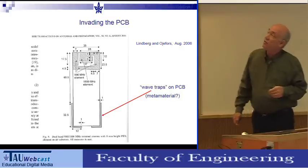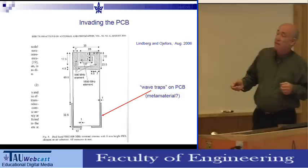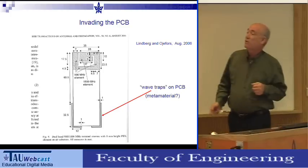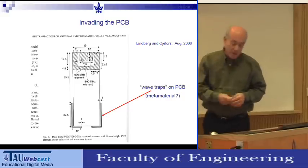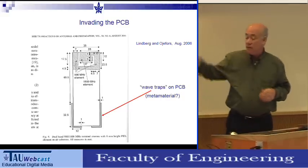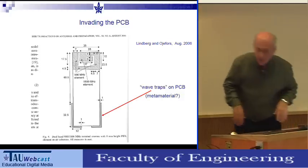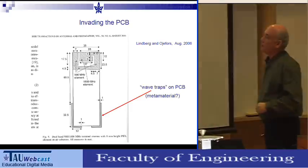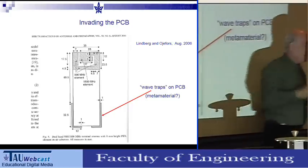Here's another example from the literature about invading the PCB. What people call the antenna in a handset — in fact the entire handset is the antenna. You invade the PCB. Early work also added wave traps around it (today we might call them metamaterials). What you see is effectively a dipole: one arm is the feed element and the PCB itself is the second arm, fed in between.